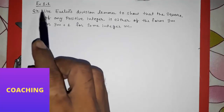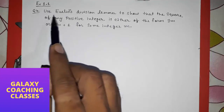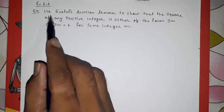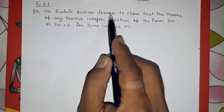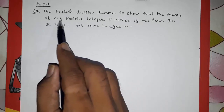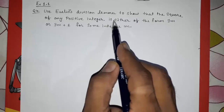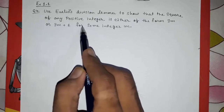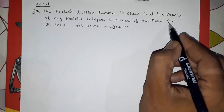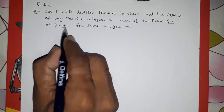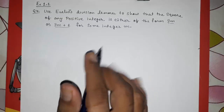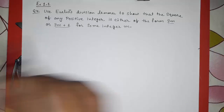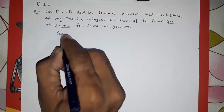Hello friends, today we are going to solve CBSE Class 10 Mathematics Exercise 1.1 Question 4: use Euclid's division lemma to show that the square of any positive integer is either of the form 3m or 3m plus 1 for some integer m. We can see that our divisor b will be 3.